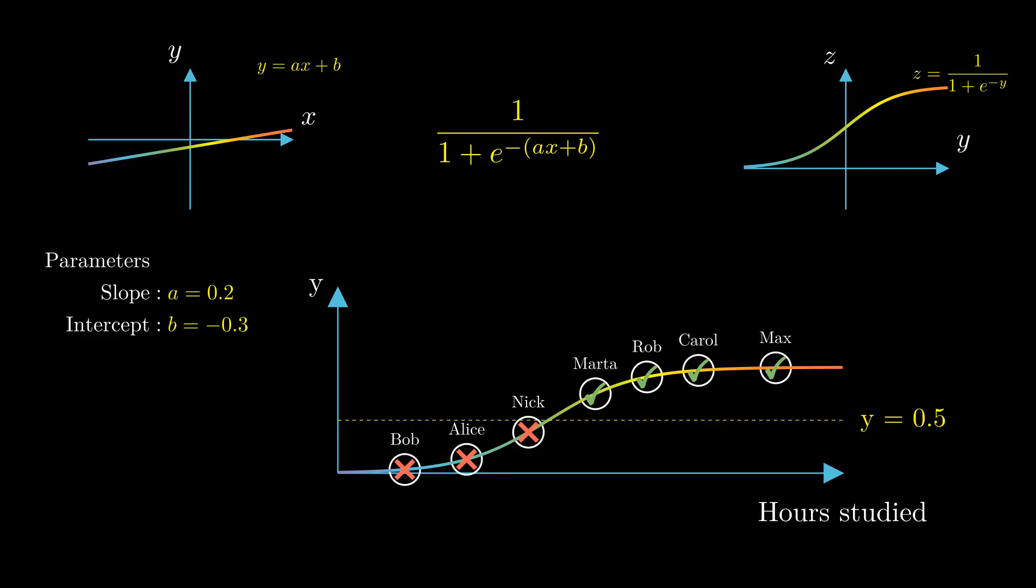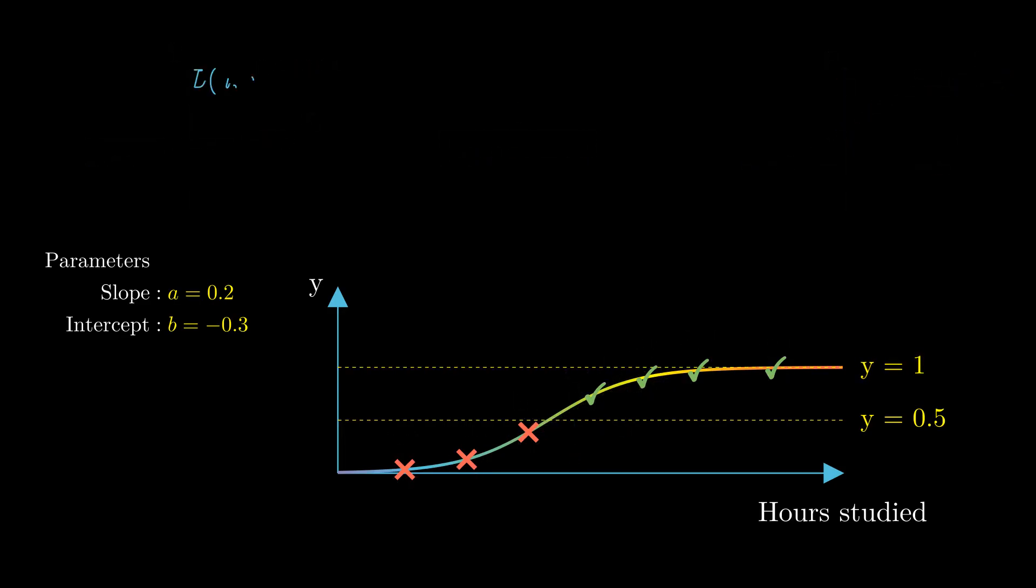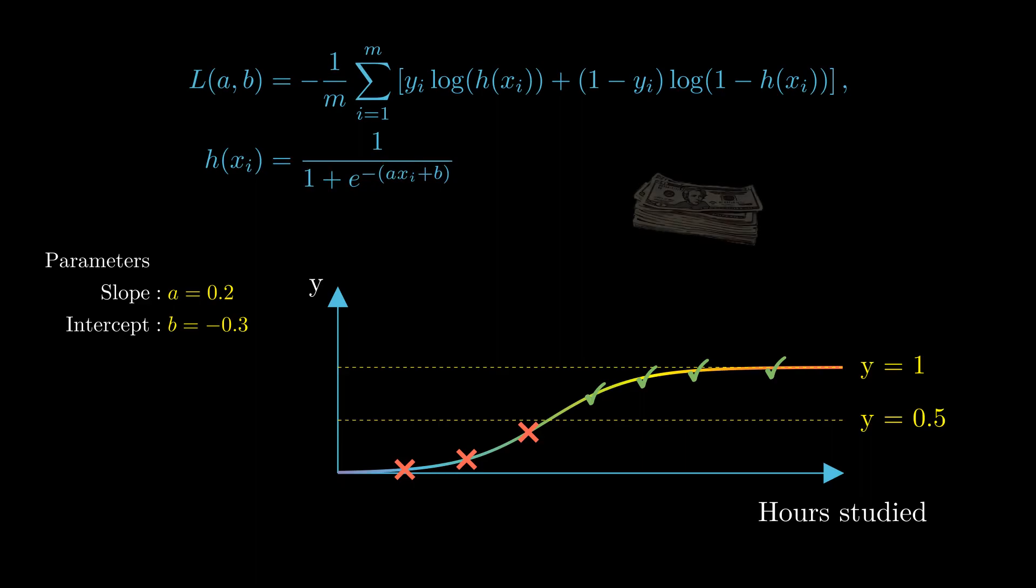Now, to find the curve that best fits the data, we need to minimize a special function called cost function. You can think of it as the price the algorithm has to pay for choosing a particular curve. Notice that this function depends on parameters a and b. This is because every logistic curve is defined by these two parameters. So choosing the best curve can be thought of as finding values for a and b that minimize the cost function.